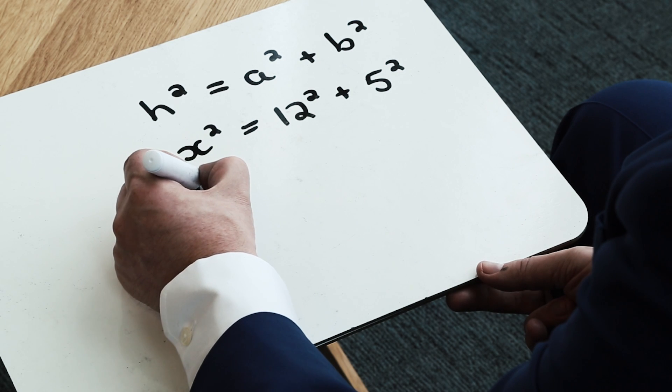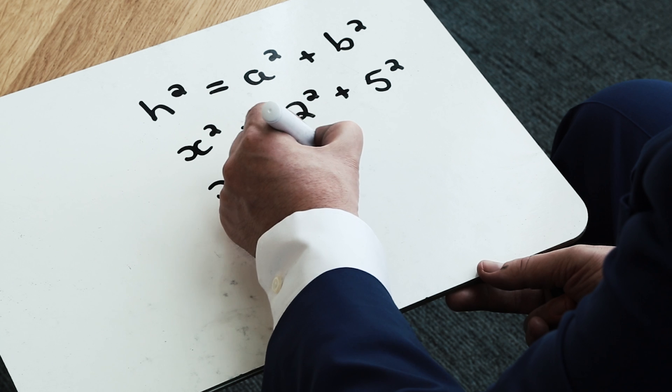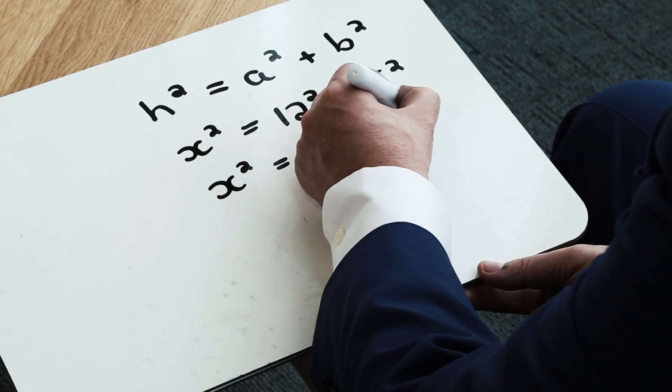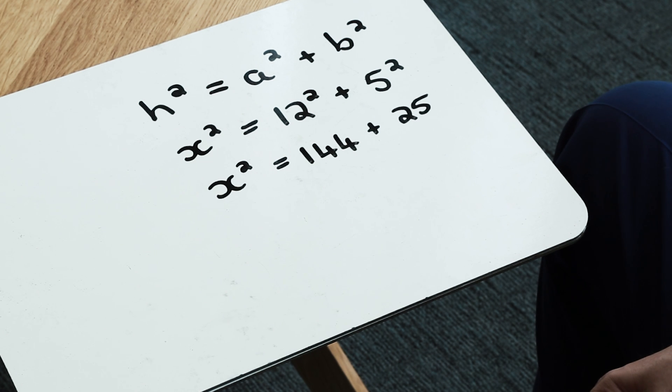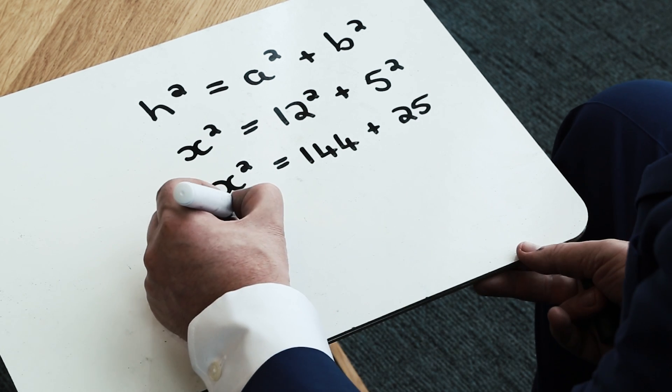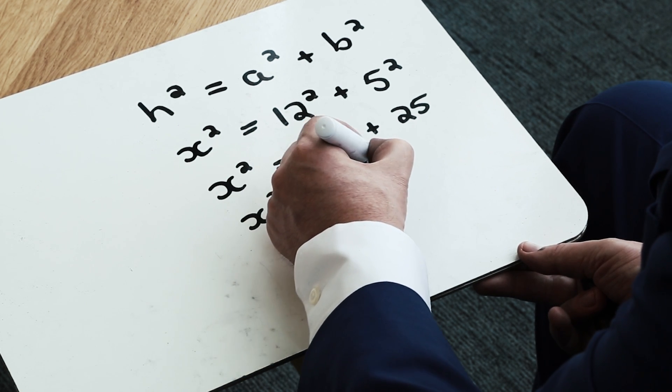When I progress forward with this, my next line would simply be that h squared is equal to—I know that 12 squared is 144, I know that 5 squared is equal to 25. And when I add these two results together, I can see that h squared is actually equal to 169.